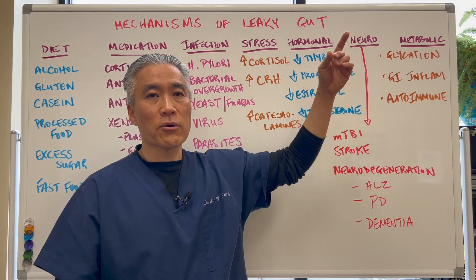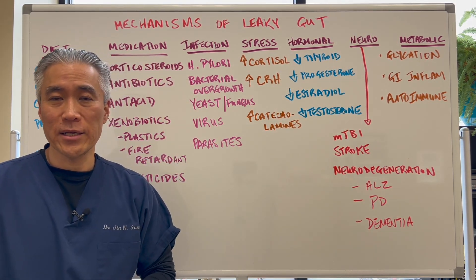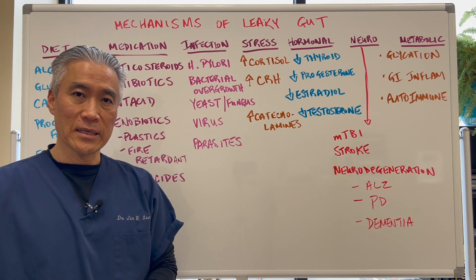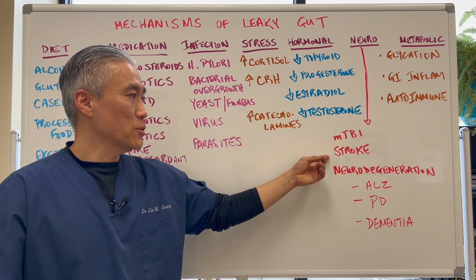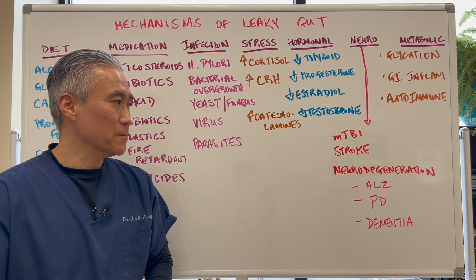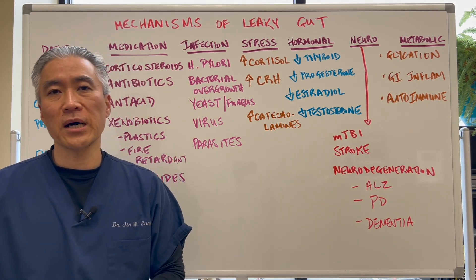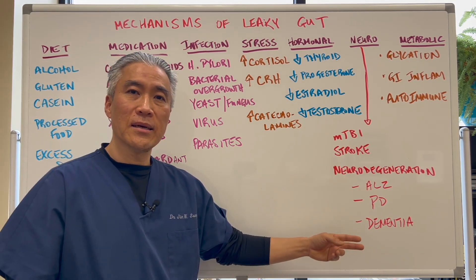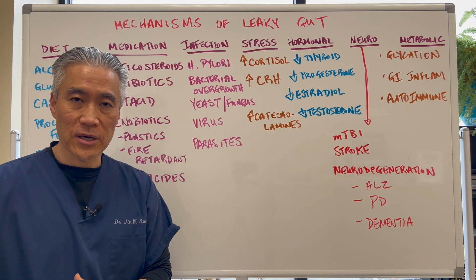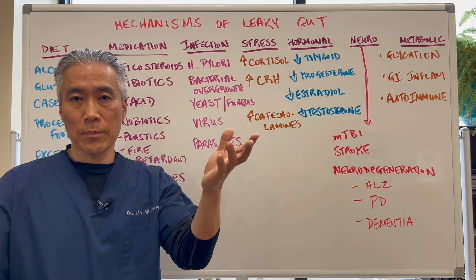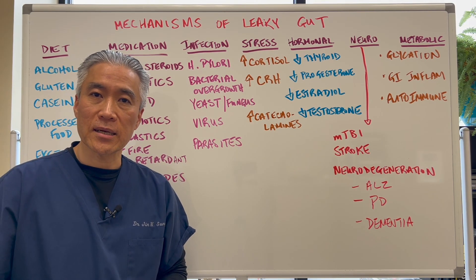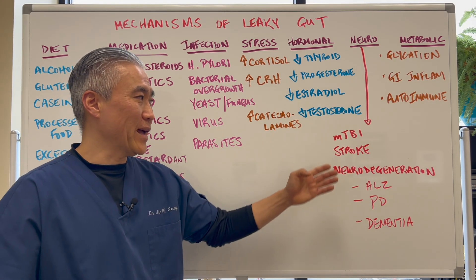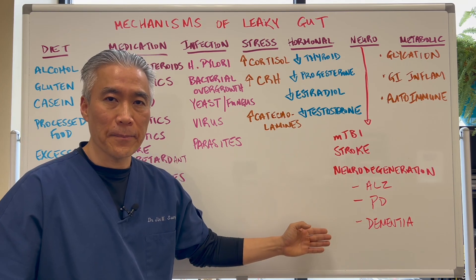In neurology: mild traumatic brain injury or severe brain injury can immediately cause leaky gut syndrome. Stroke, which also impacts the brain. And neurodegenerative processes — things like Alzheimer's disease, Parkinson's, and dementia will all impact gut function. Because the brain speaks to the gut and the gut speaks to the brain. There are neurological connections here. Therefore, anything that impacts the brain can impact the gut.